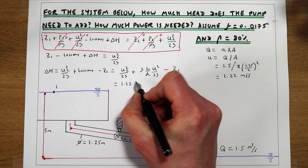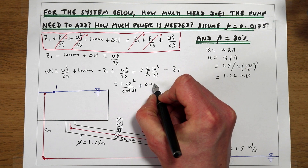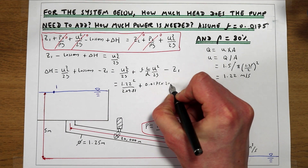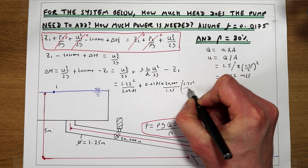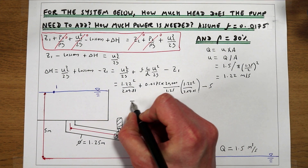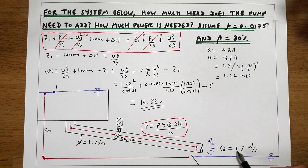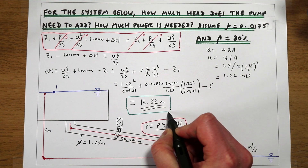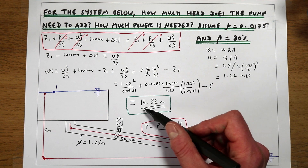We now have everything needed to plug in the numbers: velocity 1.22 m/s, friction factor 0.0175, pipe length 20,000 m, pipe diameter 1.25 m, and Z1 equals 5 metres of elevation. This tells us the pump needs to add 16.32 metres of energy to keep the system flowing at 1.5 m³/s. That is how much head ΔH the pump needs to add to the system to keep it flowing.